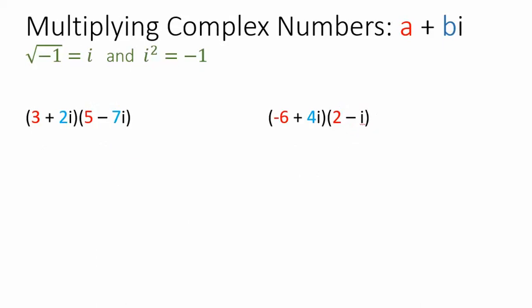Let's try multiplying. This is going to get a little more complicated. But if you look at these two complex numbers, this should remind you of something — it looks like a binomial times a binomial. It looks a lot like 3 plus 2x times 5 minus 7x. And we are going to approach the problem the same way. You can think about FOILing this.